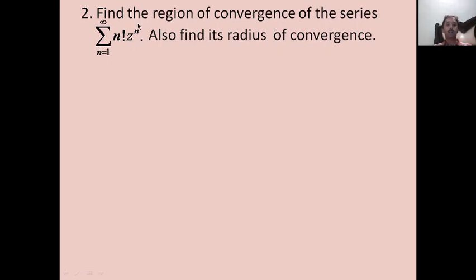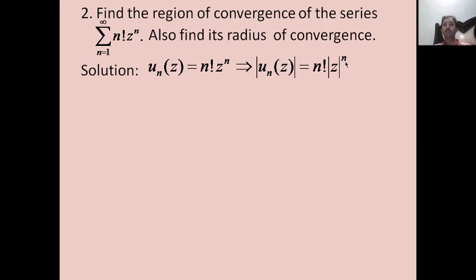Next example: find the region of convergence of the series sigma n! · z^n and also find its radius of convergence. The region of convergence is the region where the series converges, and the radius of convergence R satisfies: |z| < R implies convergence and |z| > R implies divergence. Here a = 0, so u_n(z) = n! · z^n, giving |u_n(z)| = n! · |z|^n. Since we have a factorial term, we use D'Alembert's ratio test.